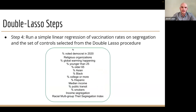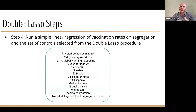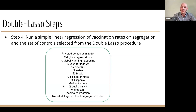Here's a list of the controls selected by our double lasso procedure: percent voting Democrat in 2020 — we expected that one; religious organizations; percent global warming happening — how many people in the county believe global warming is happening; age; some ethnicity; income; health variables like smokers; percent public transit; and racial segregation was also included.